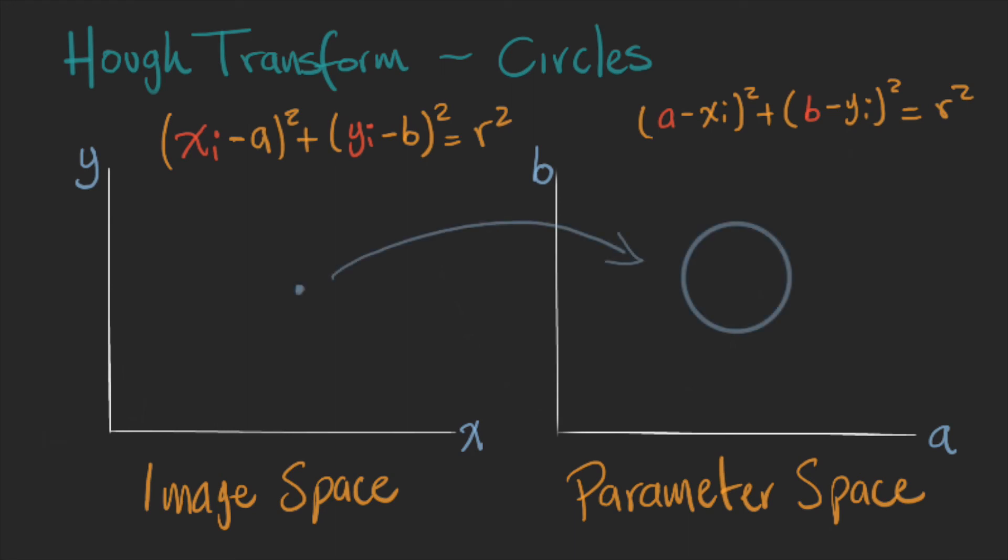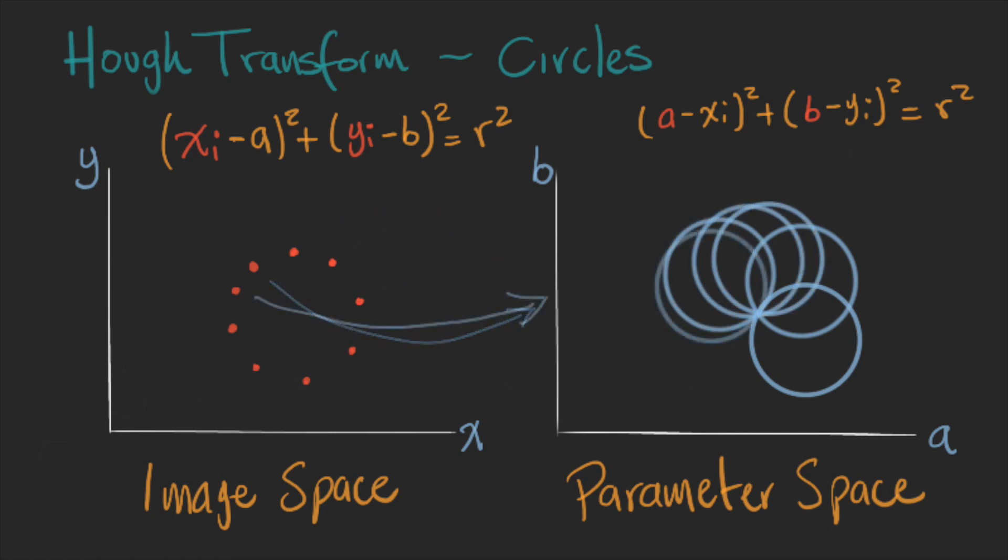In the same way that it worked for the straight line, each point in the image space will create a circle in the parameter space. We transform every point in the image and we will find the point in which all the circles intersect. And that is the position of the circle we are looking for.